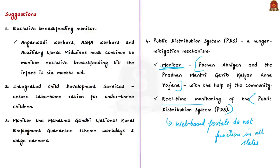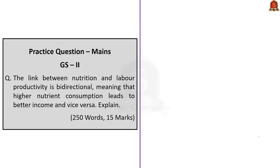Under PDS, rather than just focusing on ensuring food security or eradicating hunger, the government should also focus on providing enough nutrients using the grains provided in these shops. The author has given certain new suggestions and stressed on monitoring existing schemes and practices. India has the mechanism to perform better in malnutrition indicators, but there is a lack of ensuring implementation. These points will be helpful in main answer writing regarding malnutrition issues and India's performance in malnutrition indicators.